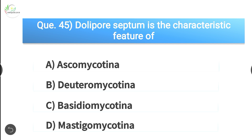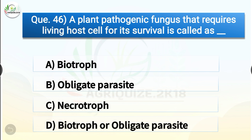Question number forty-six: A plant pathogenic fungus that requires a living host cell for its survival is called as dash. The options are biotroph, obligate parasite, necrotroph, or biotroph or obligate parasite. The correct answer is option D, biotroph or obligate parasite. A plant pathogenic fungus that requires a living host cell for its survival is called a biotroph or obligate parasite.